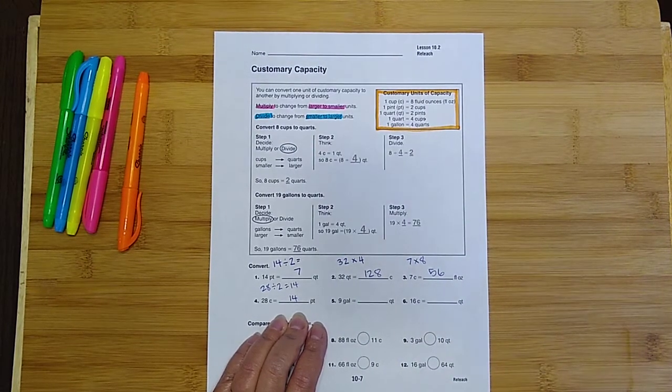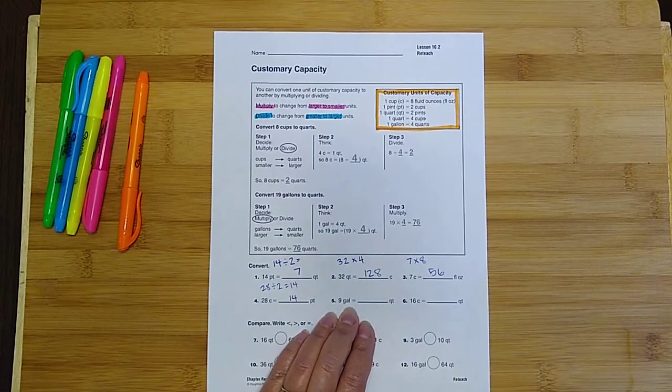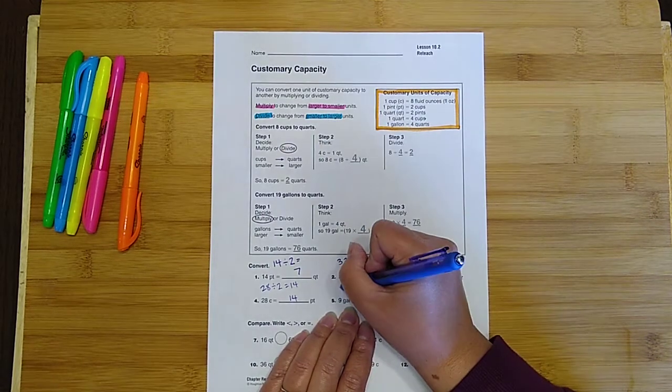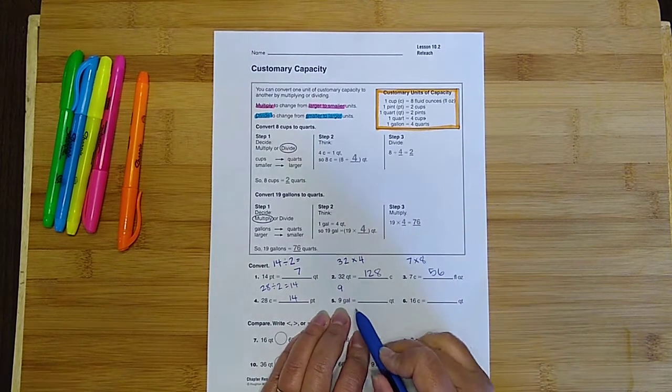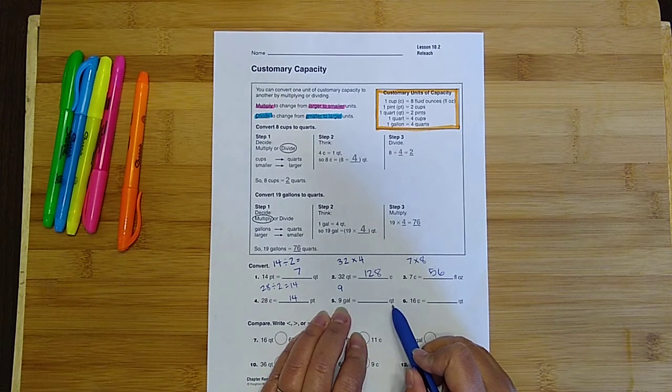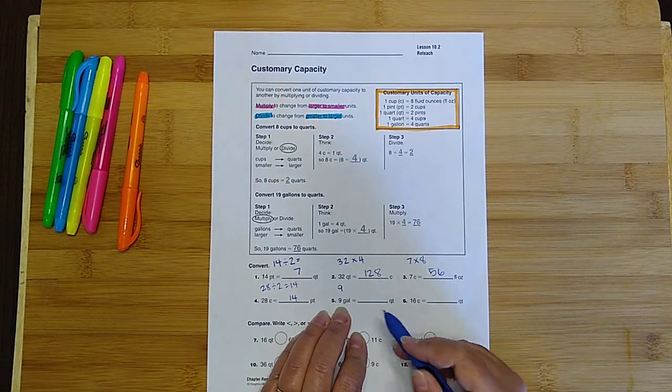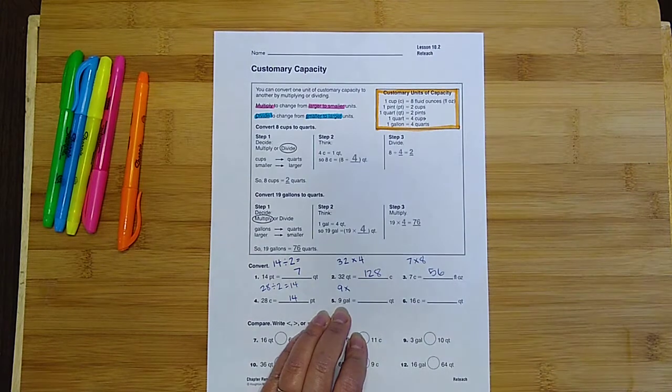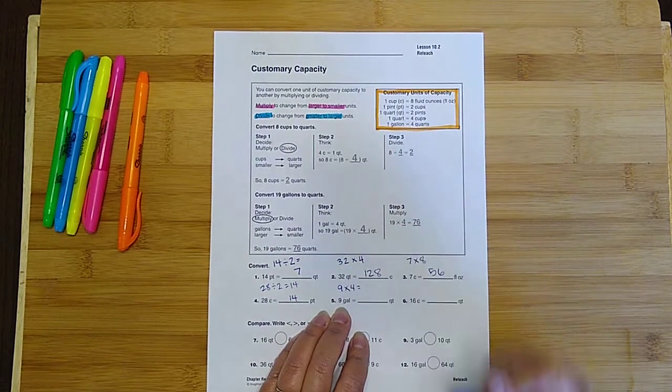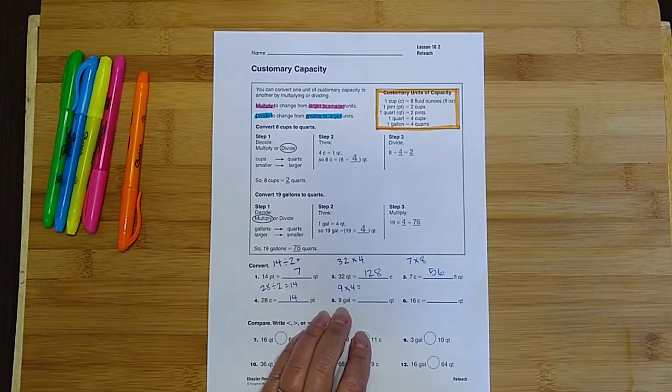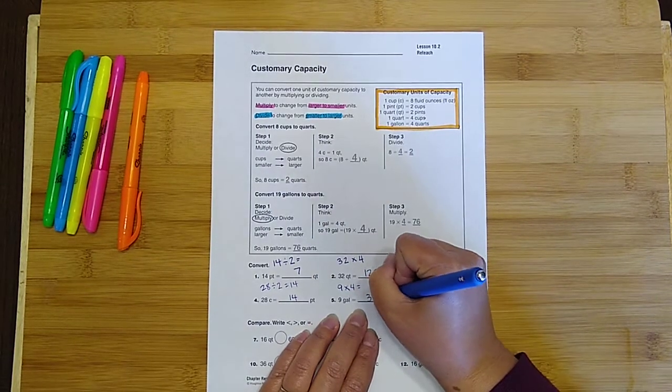Okay, and then on number five, 9 gallons, so we would have done 9, and since gallons is bigger or larger than quarts, we're going to multiply. 9 times 4. That's an easy one. What's 9 times 4? It's 36.